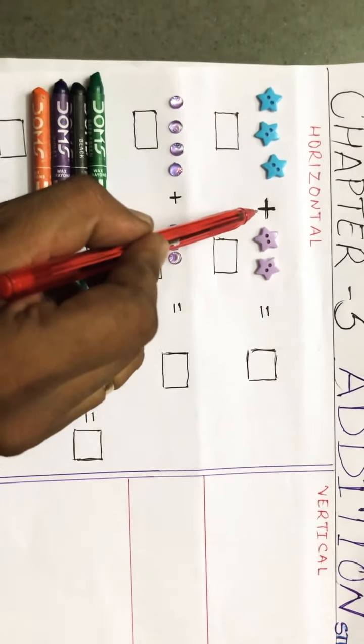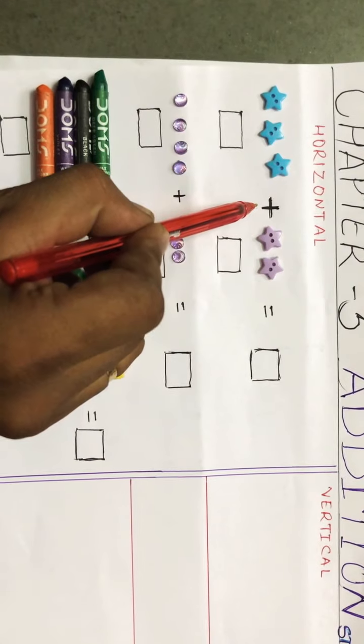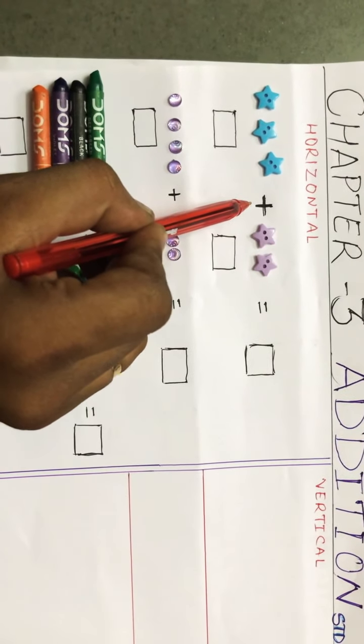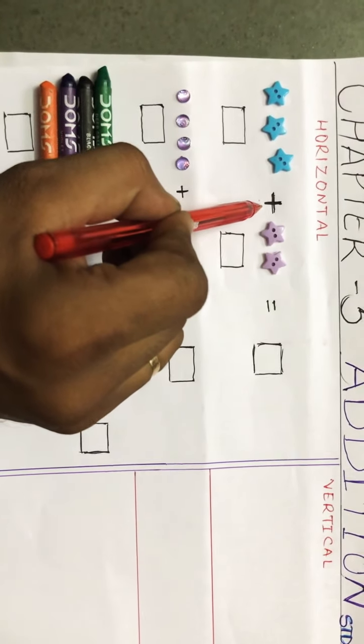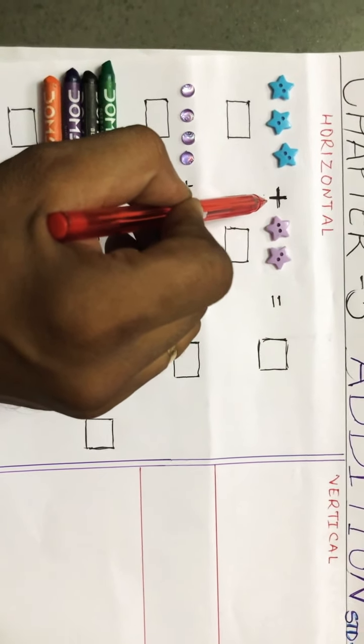And this is the sign of addition, it is called plus. Repeat after me once again, it is called plus, and addition means to put things together.